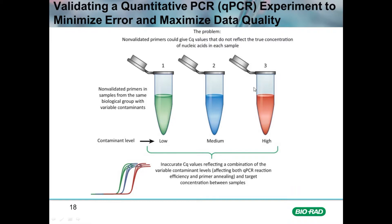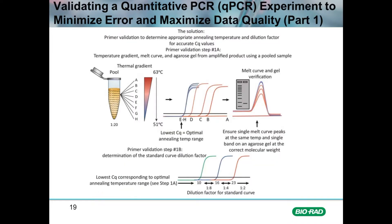In the case where these would be three biological replicates from the same treatment group — say three control samples — we would have very high variability within one set of samples, potentially leading to non-statistically significant data. How do we solve this problem in qPCR? By validating the primers. Primer validation is essential to assure high quality data, and it starts by generating a pooled sample.